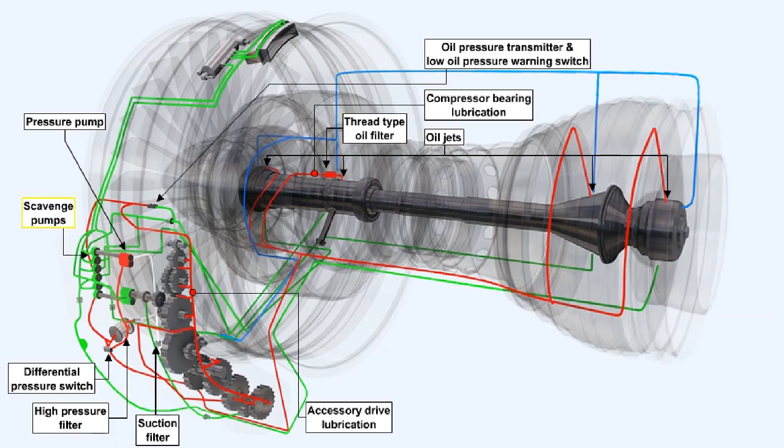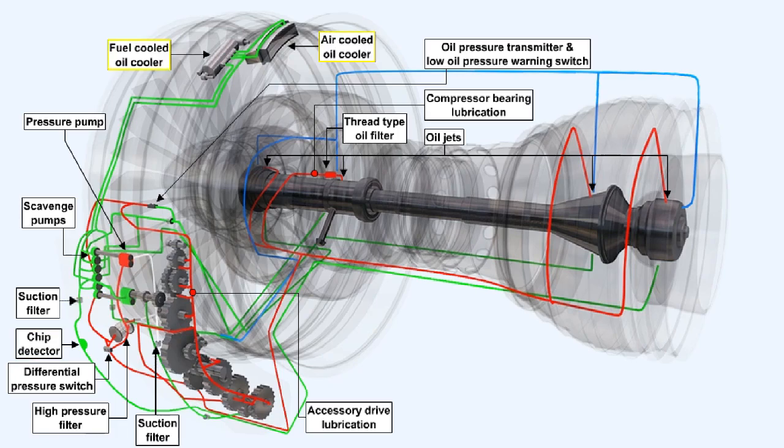In a similar manner to the pressure relief valve system, when the oil has completed its tasks it's collected by scavenge pumps. Prior to the oil reaching the scavenge pump it passes over a chip detector and through a suction filter. The scavenge pumps pass the oil to the oil cooling system.